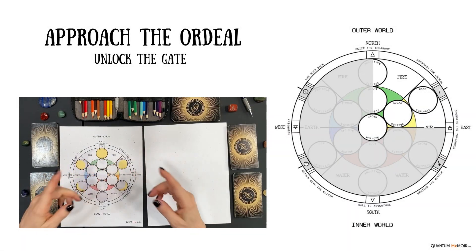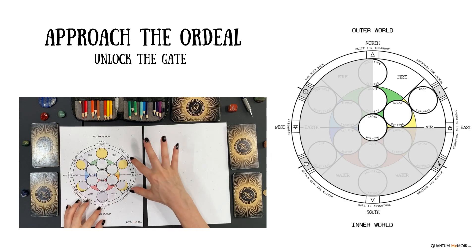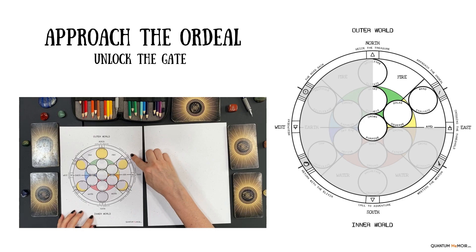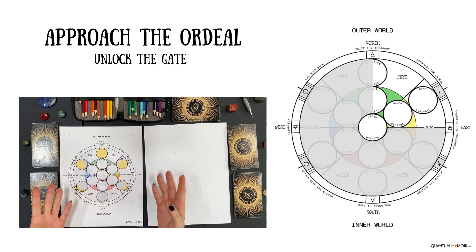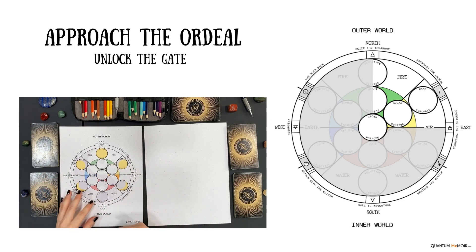Approach the ordeal. Now unlock the gate with courage and enter the fire element. Now that you've crossed two bridges, you've gained the sword and the wand, you have possession of many keys and keyword energy from the chakra systems.